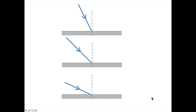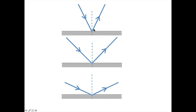Here are three reflecting surfaces with light shining at different angles, showing how the law of reflection affects the reflected rays. When the ray is closer to the normal, the angle of incidence is smaller, producing a smaller angle of reflection. As the angle of incidence gets bigger, the angle of reflection also gets bigger. This is similar to throwing a ball against a wall — small angle in gives small angle out, bigger angle in gives bigger angle out.